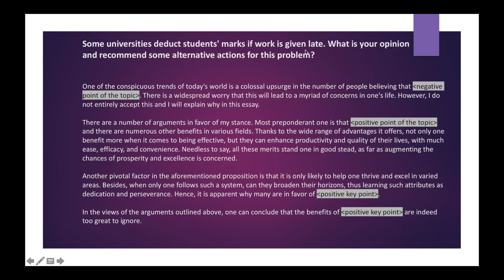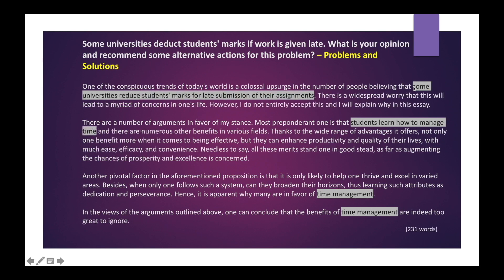Next: "Some universities deduct students' marks if work is given late. What is your opinion and recommend some alternative actions for this problem." Here it mentions a problem and asks for a solution — "recommend some alternative actions" is the solution, so this is a problems and solutions prompt. The negative point of the topic is already in the topic itself: deducting students' marks. Mention it here: "Some universities reduce students' marks for late submission of their assignments." No, I do not entirely accept this because students learn to manage time. Time management is the solution here. Remember that you can write an essay using many different ideas, but structure and relevant information are the key to scoring more points.